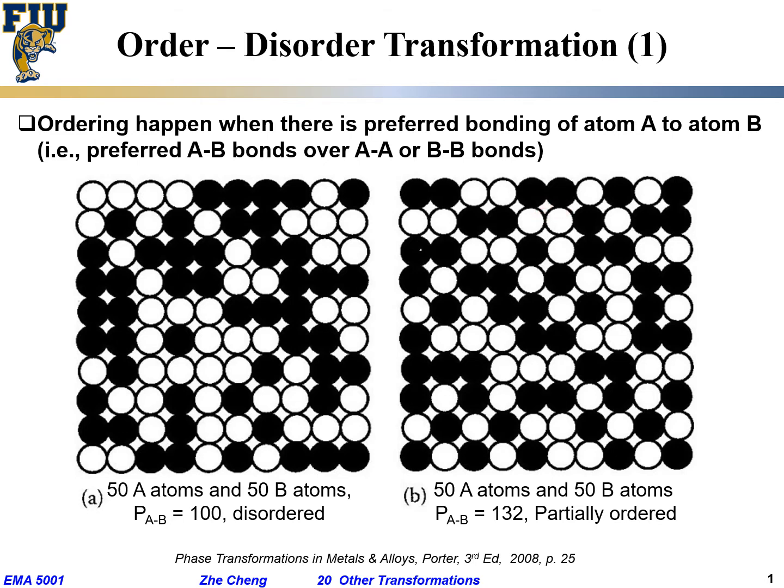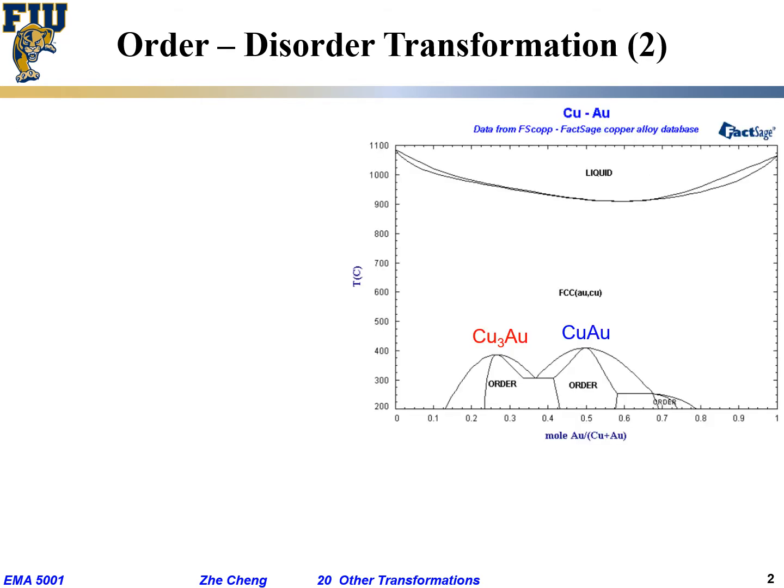In a real system, one example is between Cu (copper) and Au (gold). Looking at the phase diagram, above high temperature we have liquid phase. In between, I have this continuous solid solution, continuous from one end all the way to the other end - single phase FCC. But at lower temperature, I have two types of ordered phases: one is CuAu, the other one is Cu3Au.